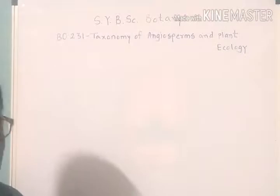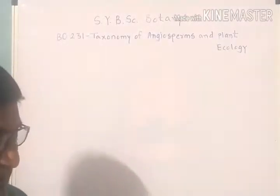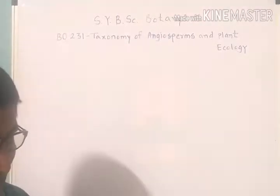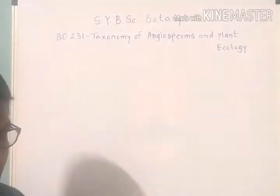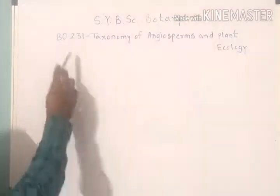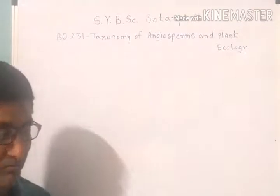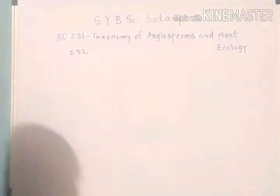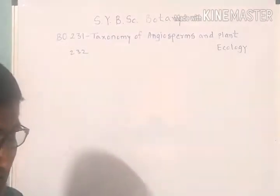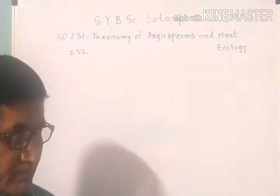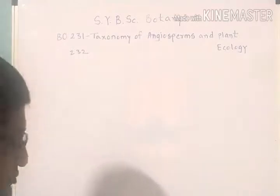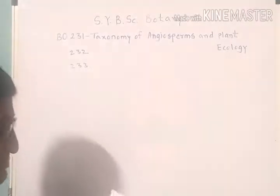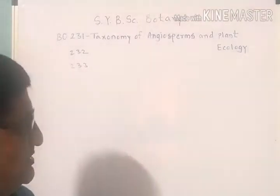For your semester fourth, for Botany, you have two theory papers and one practical course. For semester third, the theory paper is BO 231 — that is what I am going to teach you. The second course is BO 232, titled Plant Physiology, and this will be taught by another teacher of Botany. On the basis of both these courses, you have a third course, BO 233, which is a practical based on paper first and paper second.